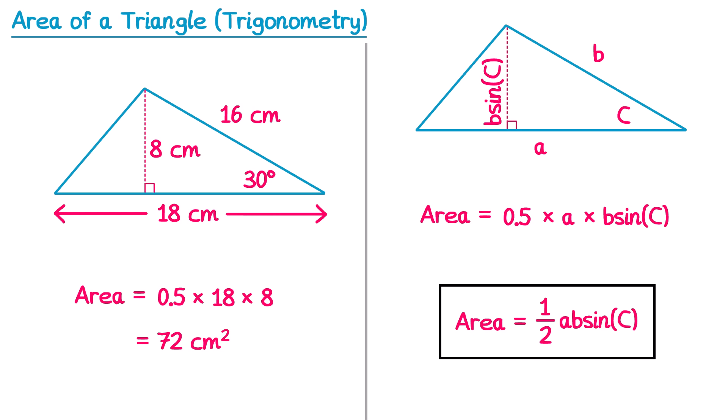The information required is one of the angles — in our case capital C — and then the two sides that go together to make that angle, so a and b. We don't need the third side or either of the other two angles. So to use this technique to find the area of a triangle, we need two sides and the angle that's in between them — the included angle.